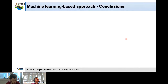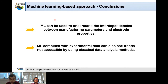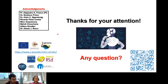In conclusion for Part 2: machine learning can be used to understand the interdependencies between manufacturing parameters — in this case slurry properties — and electrode properties such as mass loading and porosity. We found that combining machine learning with experimental data can disclose trends that are not accessible through other classical analysis methods, as demonstrated for electrode porosity. Thank you all for your attention, and I'm happy to answer questions.